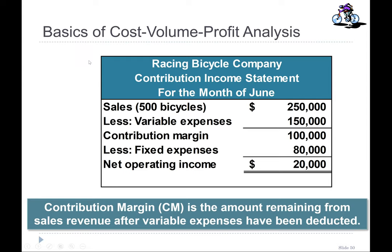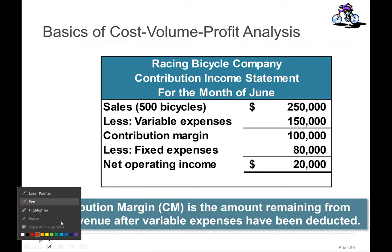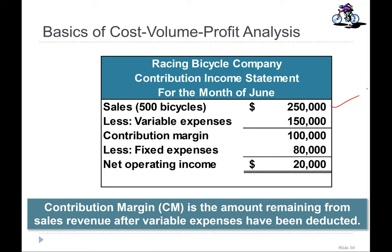We will continue with the same example — the RBC Company, which is the Racing Bicycle Company. It has its contribution margin income statement as shown here. Total sales: 500 bikes are sold, the price of each bike is 500. Variable expense is 150,000 or 300 per unit — where 300 came from 150,000 divided by 500 units. Contribution margin is 200 per unit or 100,000 total. Fixed cost is 80,000, so currently it is operating at a 20,000 profit.